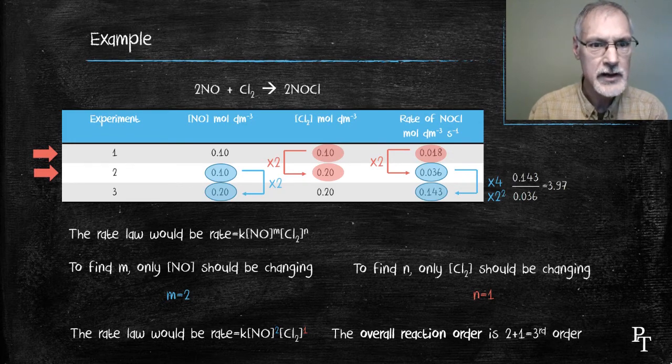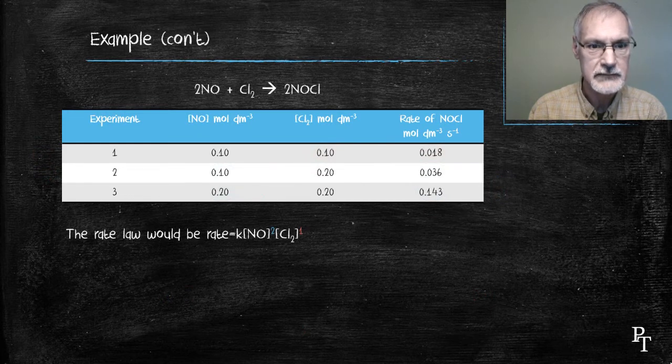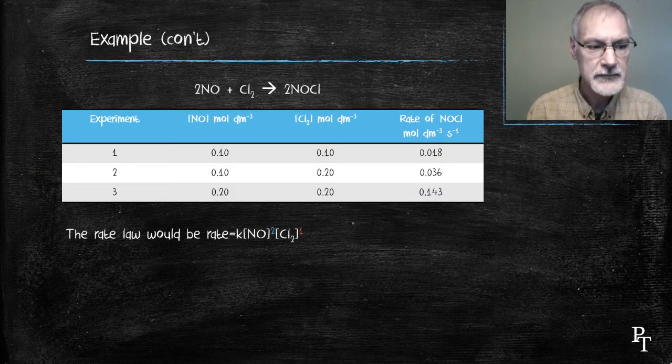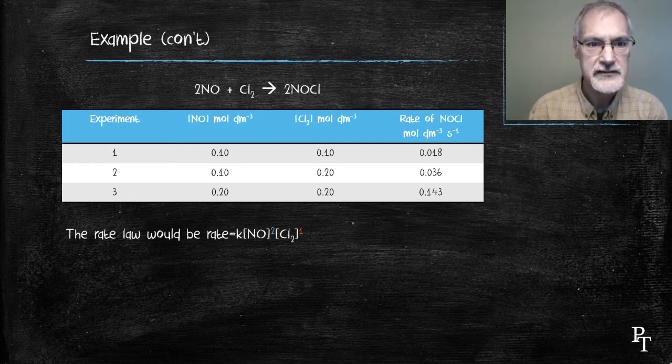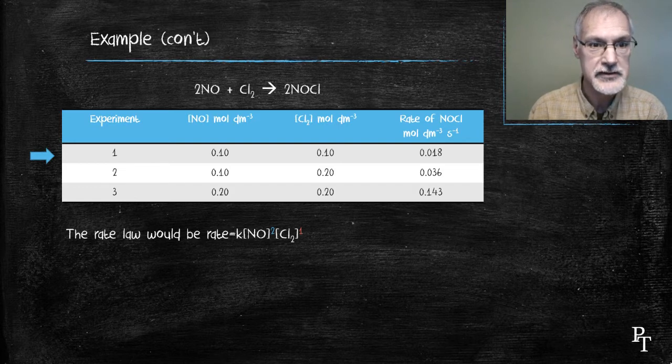To finish off this, I want to now find out what the value is of K, the constant in this rate expression. To do that, I'm going to select one of the lines of data from my experiment. I could choose either experiment 1, 2 or 3. It doesn't matter, because they will all give the same answer. For simplicity, I'm just going to choose the first line of data.